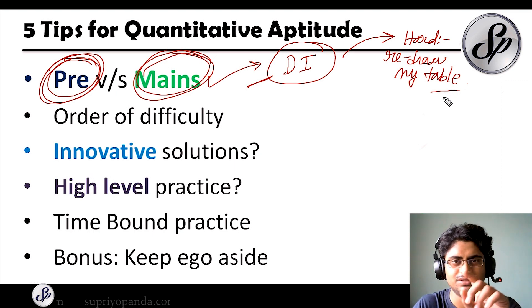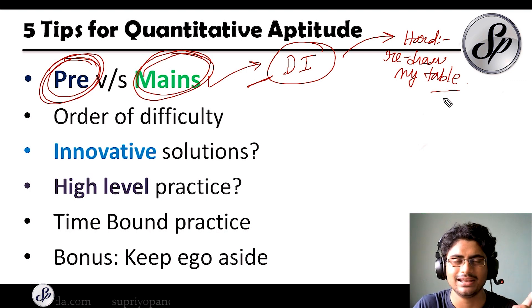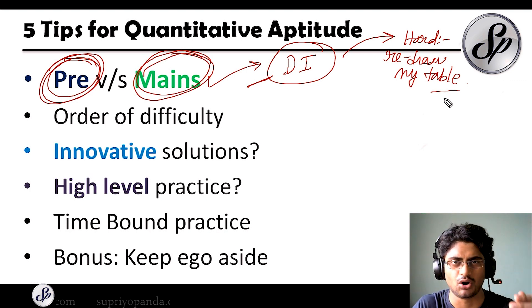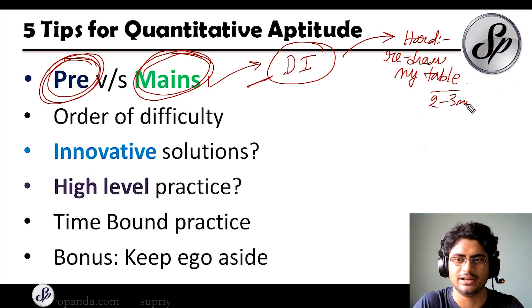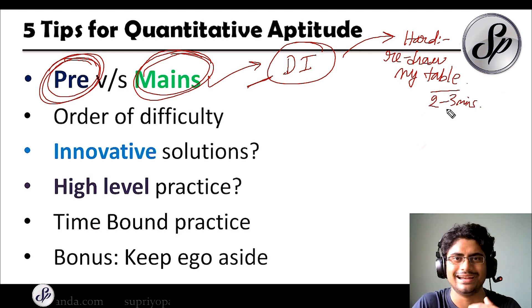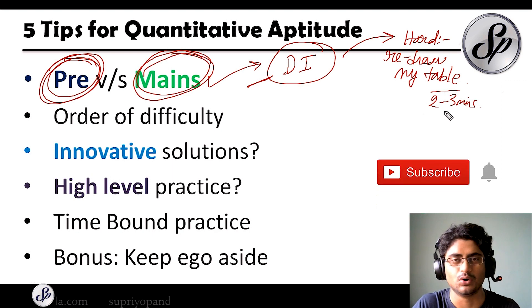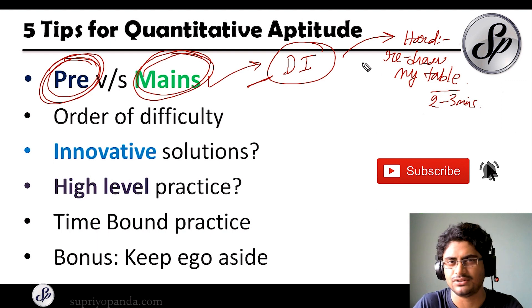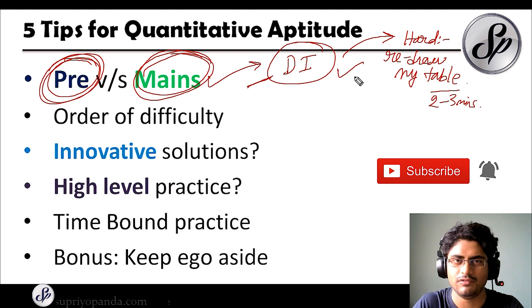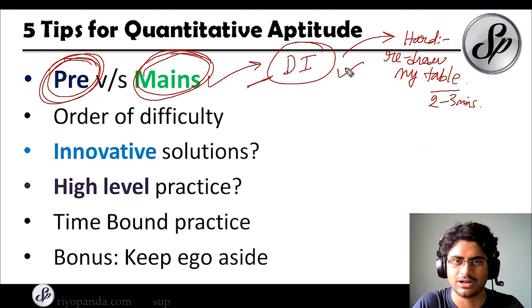For questions where you have missing values or values in the form of a line graph, you have to refer back to the drawing again and again. Instead, just plot the values, write them down, and then start calculating. Initially it might take two or three minutes to draw everything on your rough sheet, but once done the entire question becomes very simple. So I would always tackle two or three DIs first in mains.